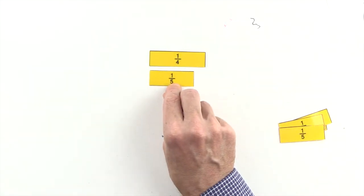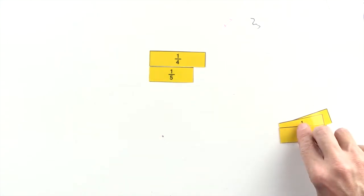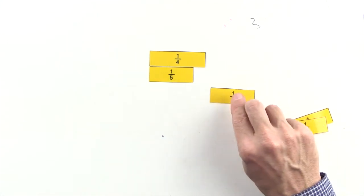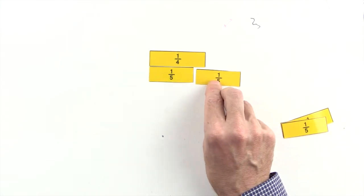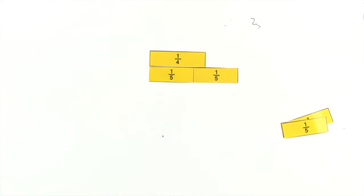One fifth is less than one quarter, and two fifths are greater than one quarter, so we can't use fifths to make an equivalent fraction to one quarter.